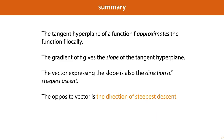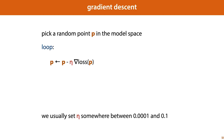Let's look back at what we've learned. The tangent hyperplane of a function is a linear function that approximates the function f locally. The gradient of f gives us the slope of the tangent hyperplane in each direction, and the vector expressing these slopes is the direction of steepest ascent. Therefore, the opposite vector is the direction of steepest descent. With this, we can finally present the gradient descent algorithm.